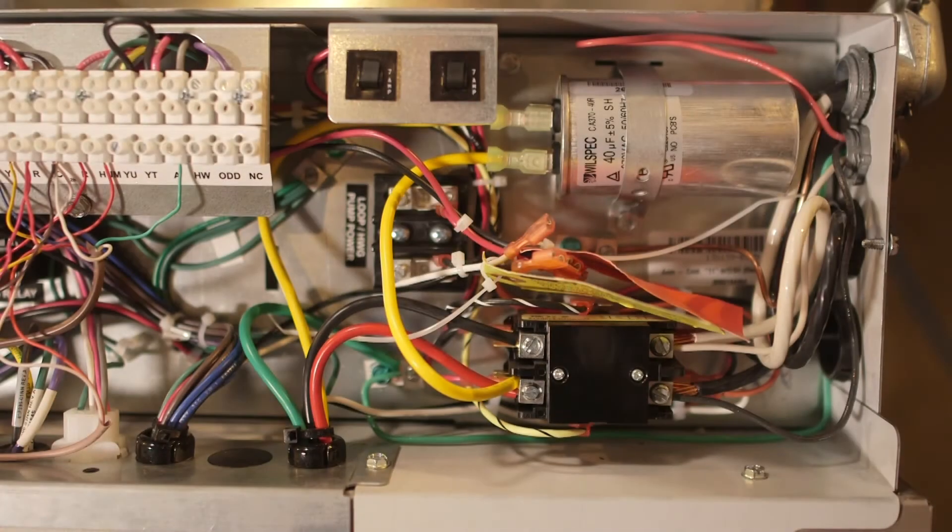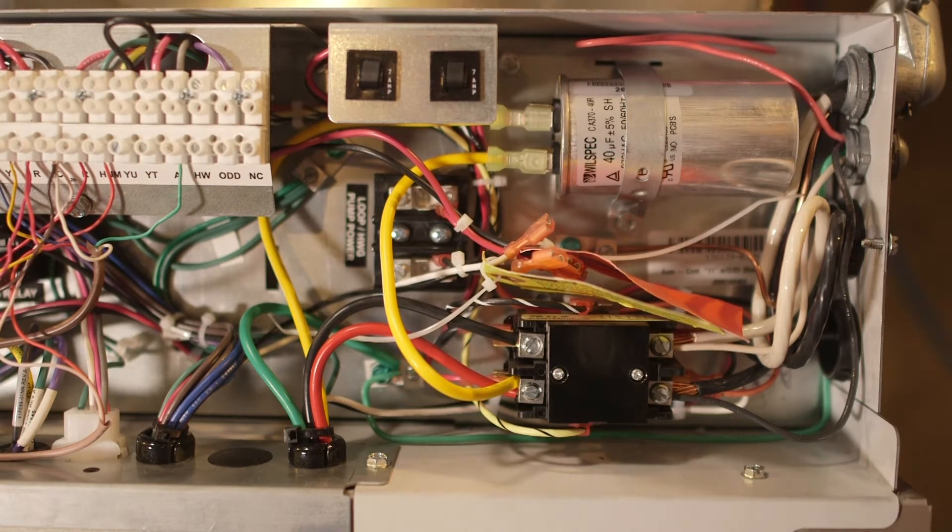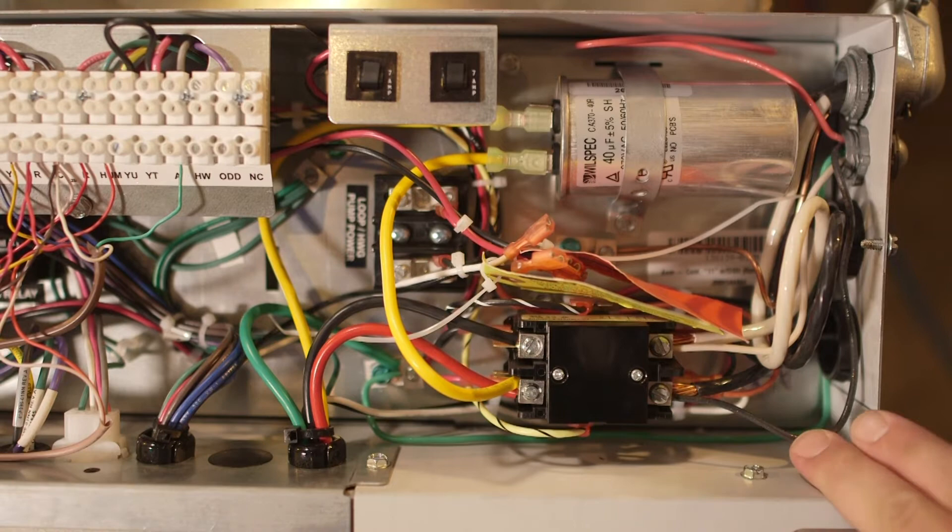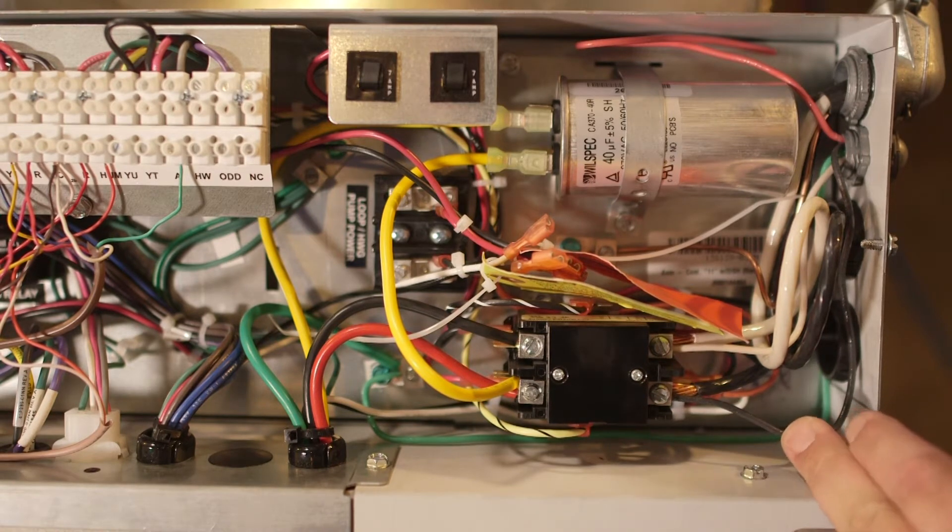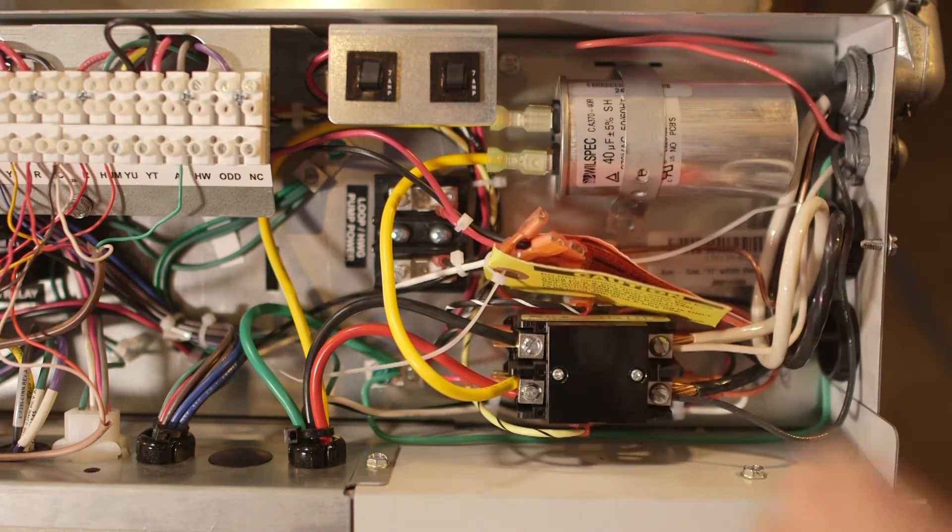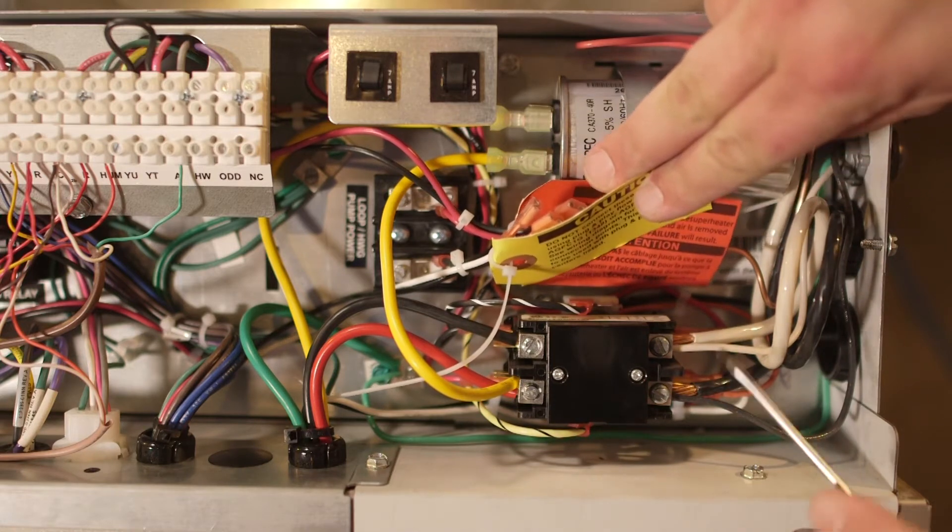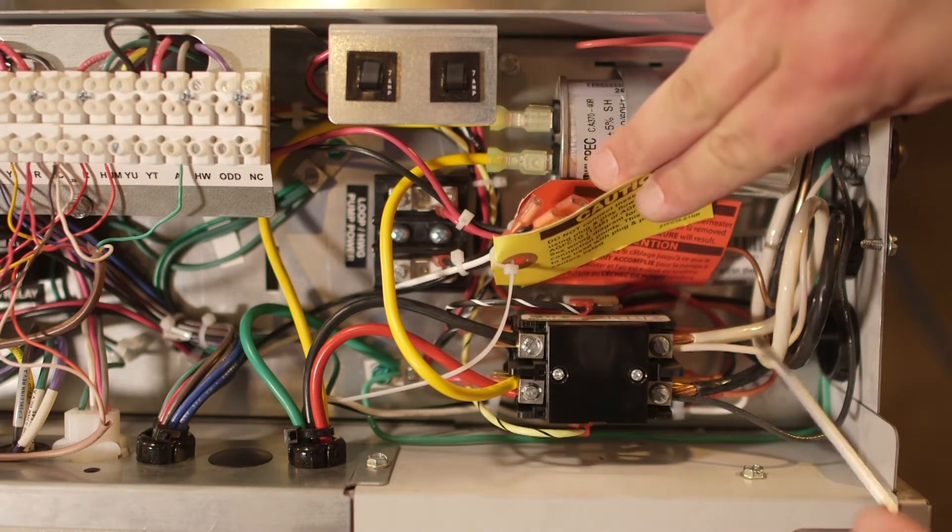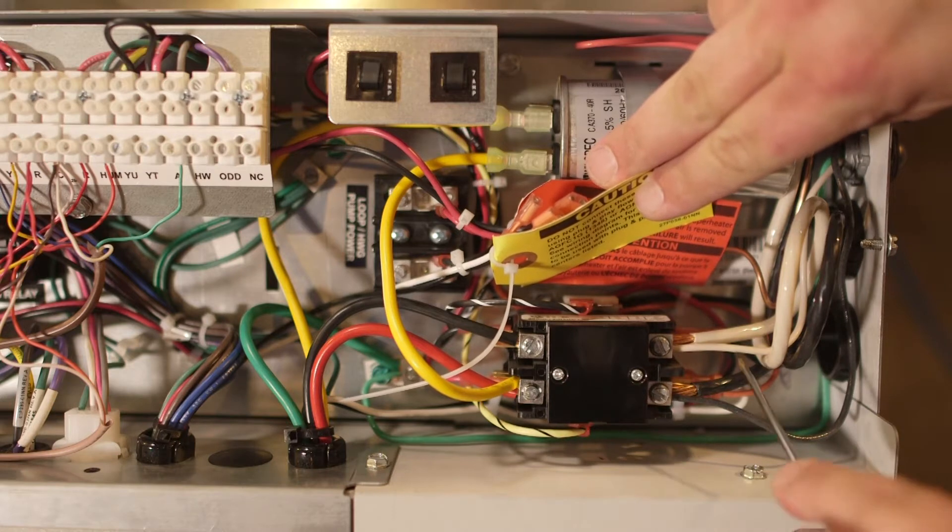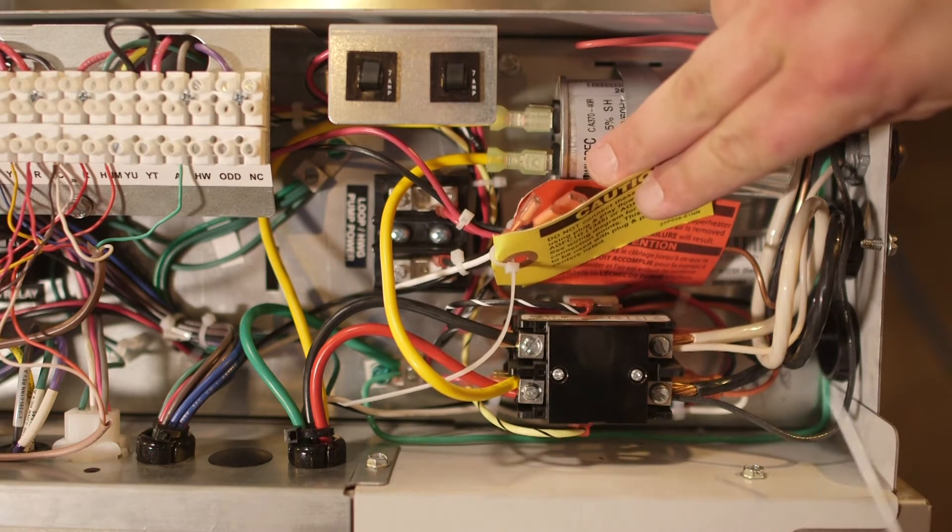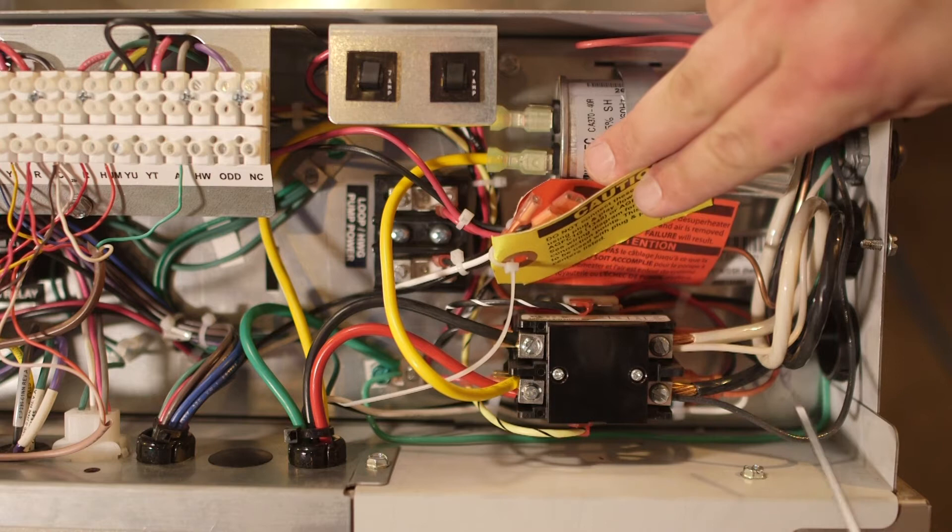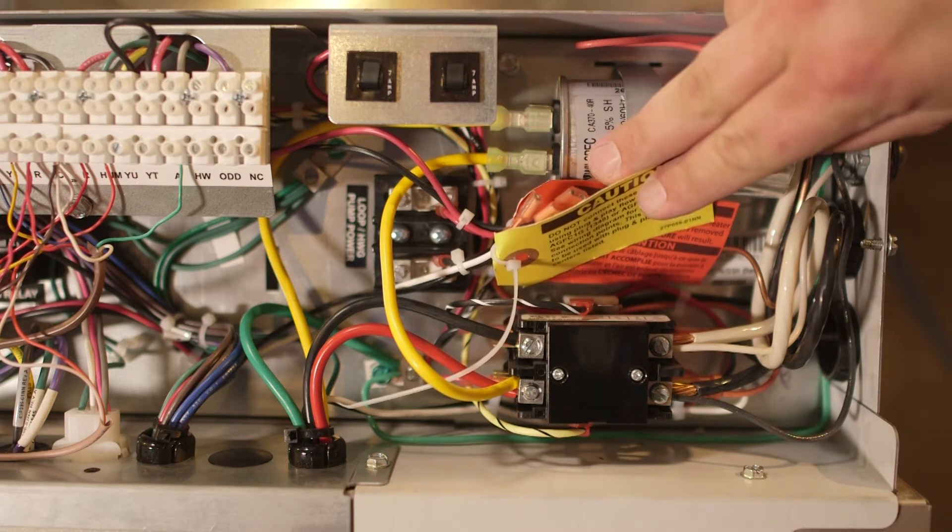Alright guys, so when it comes to the high voltage side of the variable speed flow center, if you do have a single pump variable speed flow center, your high voltage will land just like we have on this unit, right in with the contactor. You can see here we've got our high voltage coming in from our breaker panel, and we've got the smaller green field here that runs over to power our variable speed pump.